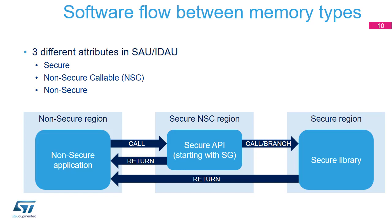The secure attribute delivered by the SAU and IDAU can be secure, non-secure callable, or non-secure. When a non-secure application requests a secure service, it first calls a veneer contained in the secure non-secure callable region. This veneer must start with an SG instruction. If these conditions are satisfied, then the transition to secure state is effective. The veneer generally branches to a secure region containing the library of secure services. Once the secure service is completed, a direct transition from secure region back to non-secure region is performed.